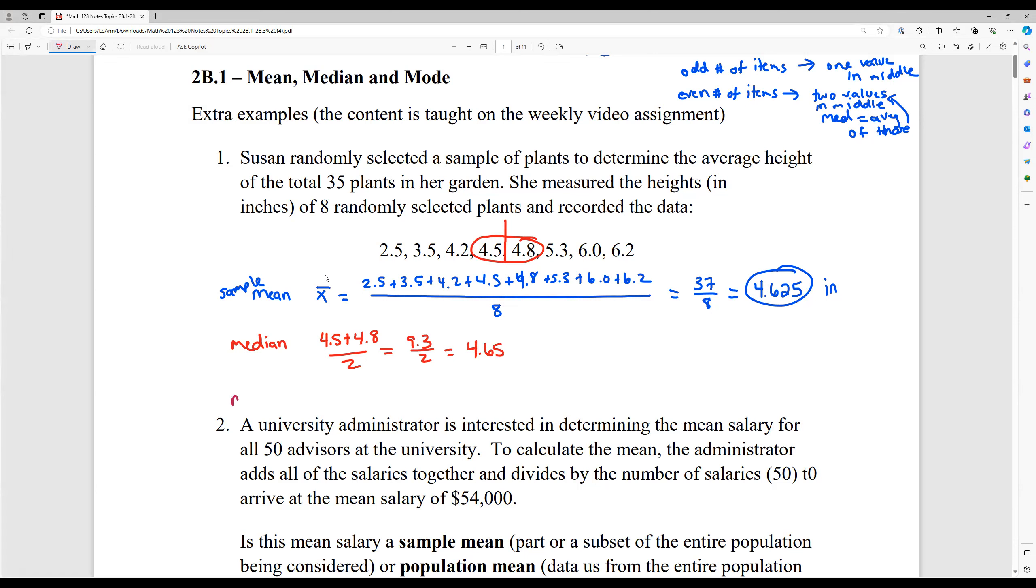And then lastly, the mode. Well, to have a mode, you have to have an item that repeats more than any of the other ones. All of these are singular, unique items. So we have no mode. So like I said, this is very heavily taught on that pre-video assignment for this week. So this is just another example of how to find mean, median, and mode.